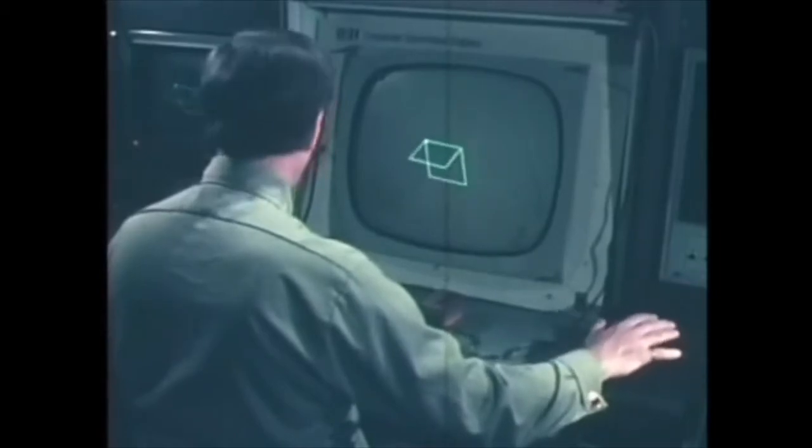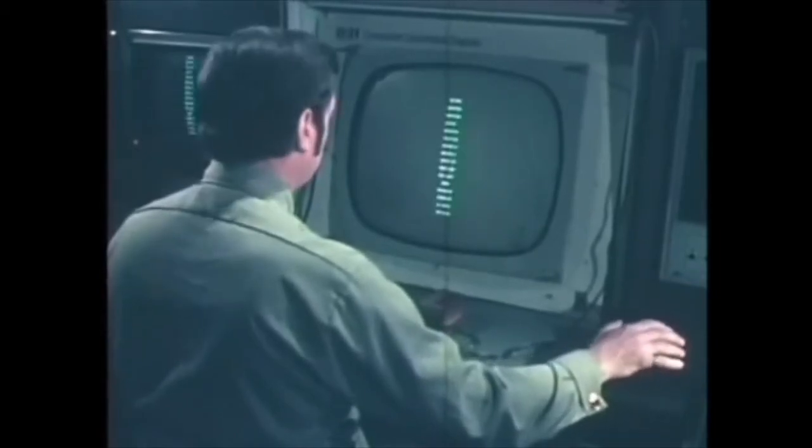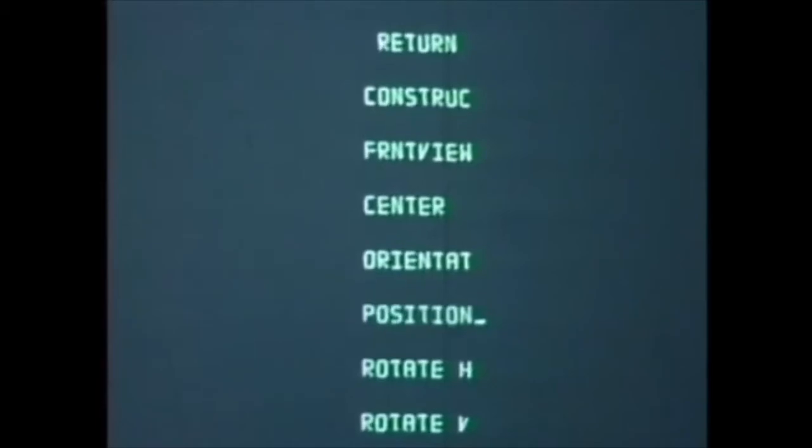The 3D package is used for generating and manipulating picture components in three dimensions. The control devices consist of a keyboard, thumbwheel encoders, and a handheld position device called a mouse. With these devices, picture components can be manipulated in position and orientation.